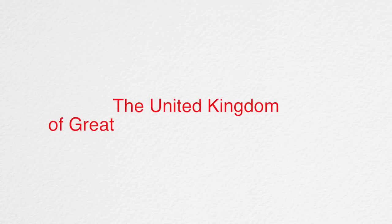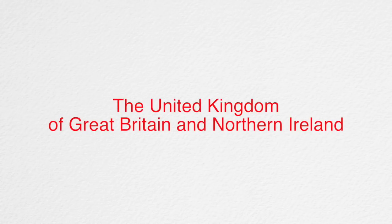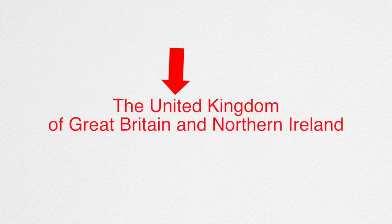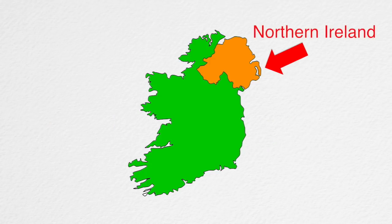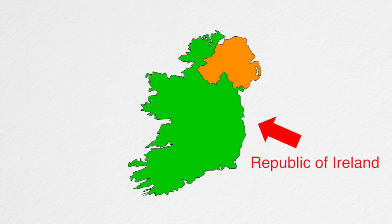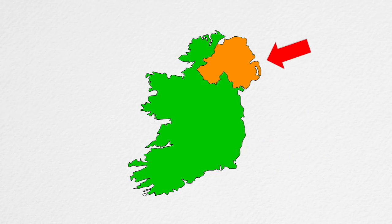The United Kingdom's full name is the United Kingdom of Great Britain and Northern Ireland, and is the kingdom that is the union of the countries of Great Britain and Northern Ireland. Northern Ireland divides the island of Ireland into the Republic of Ireland and itself.